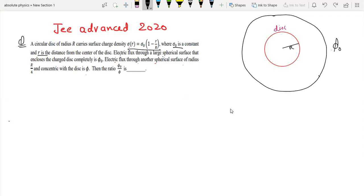There is another spherical surface of radius r by 4, concentric with the disc. The ratio phi naught by phi is what we need to find. We know that flux equals q upon epsilon naught, so this will be equal to q naught upon q.